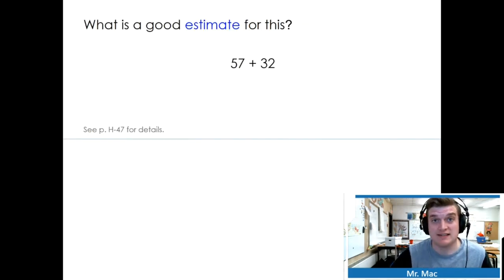What is a good estimate for this? 57 plus 36. We practiced estimating through rounding. So if we rounded these numbers, 57 would be rounded up because of the 7, up to 60. 32 would be rounded down because of the 2, to 30. I would think a good estimate to this would be 90.